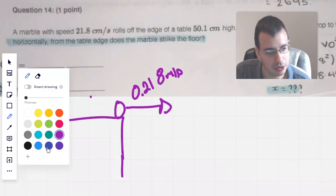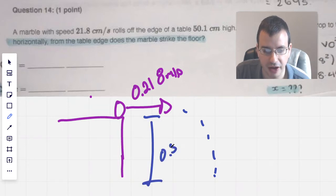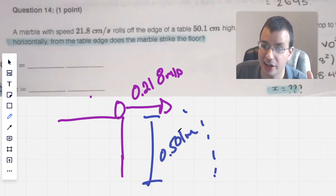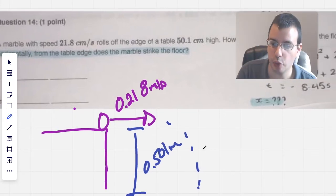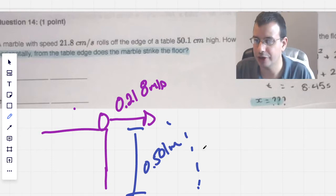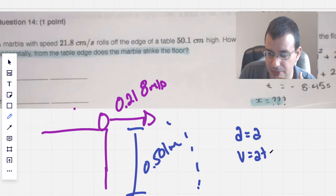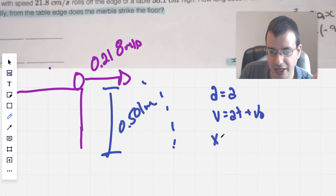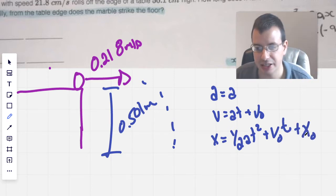Alright, and then the marble is going to fall a distance of 0.501 meters because that's how high the table is, that's how long it takes to reach the floor. So this is going to be a kinematics equation and the second step I do for kinematics problems after drawing a picture is I write up my kinematics equations. So you're assuming a constant acceleration, a equals a, v equals at plus v naught, where v is v final. And then the distance is going to be x equals one half at squared plus v naught t plus x naught.